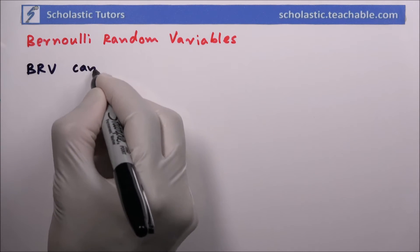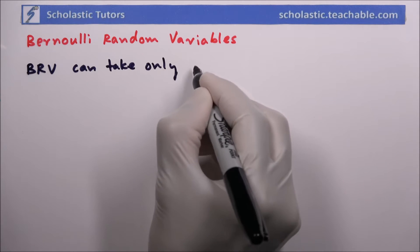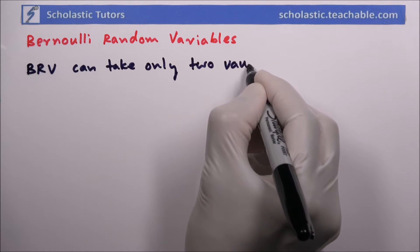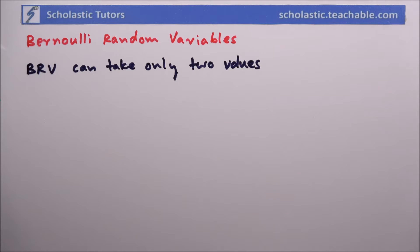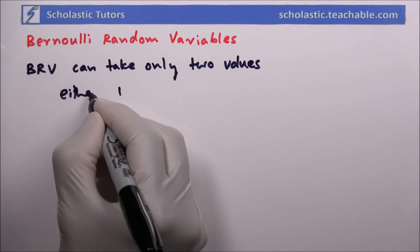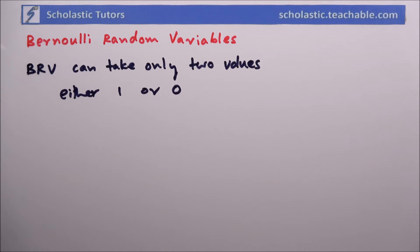A BRV can take only two values - that is the important condition. It can be either one or zero. So it can take two values, either one or zero.